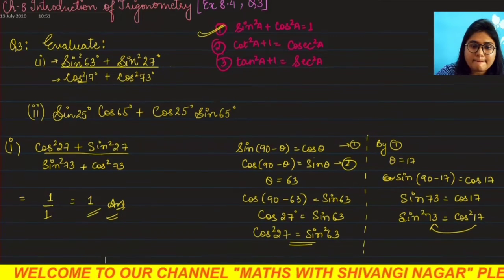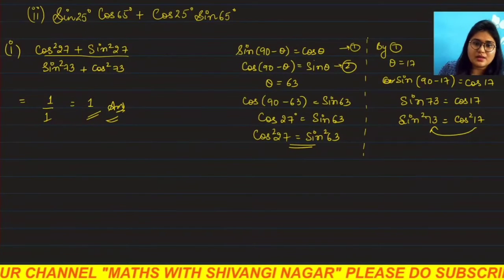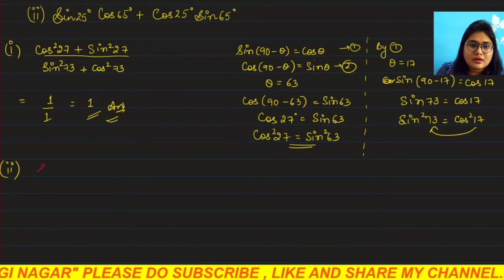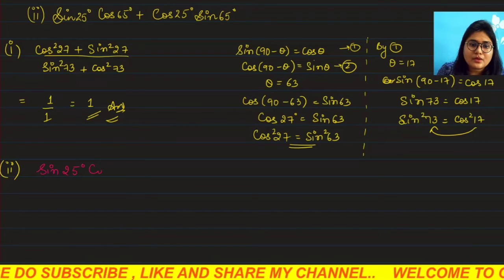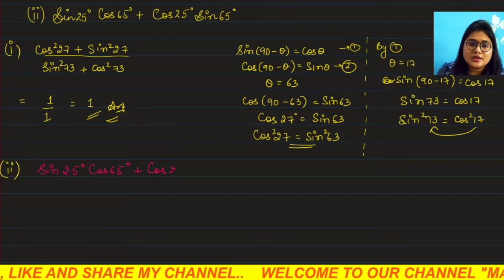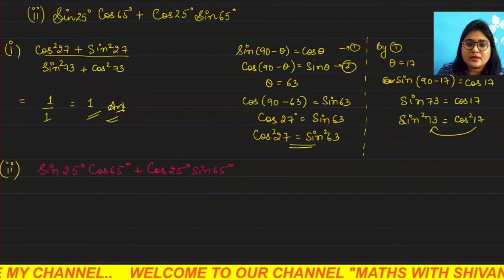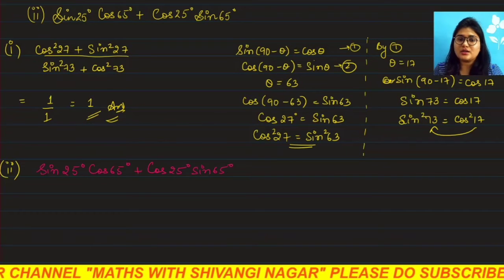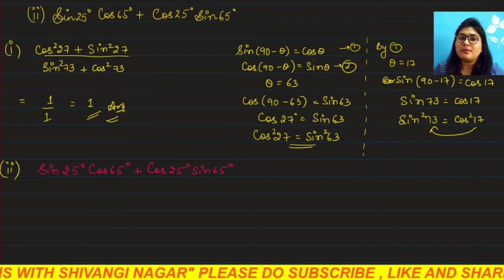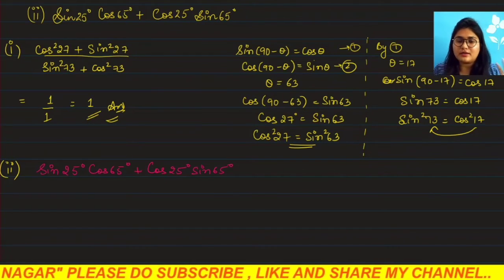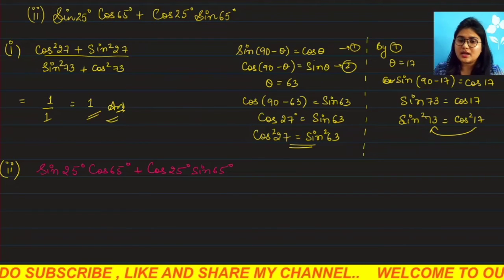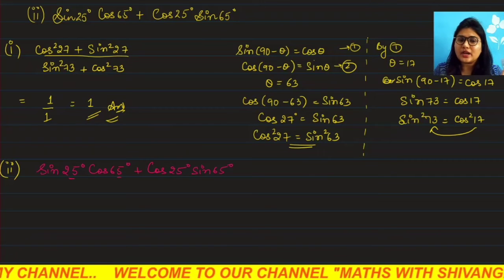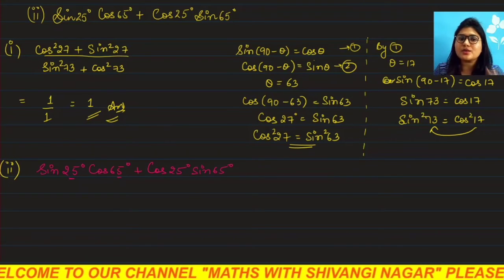Now let's solve the next part. Let me create some space. The second expression is: sin25°·cos65° + cos25°·sin65°. We will solve this according to Class 10 standard. When you go to higher classes, you will recognize this in a single line using compound angle formulas. For now, either convert sine to cos or cos to sine.